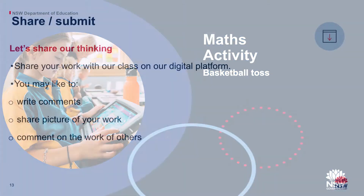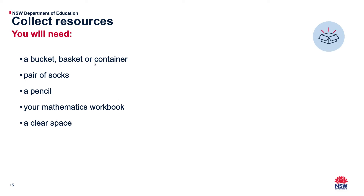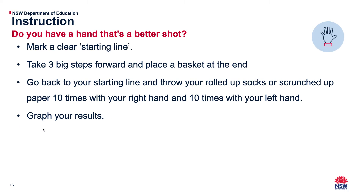Then you've got the maths activity, which is Basketball Toss - I find this one really fun. If you click on this link, it'll take you to a website with a video that shows you how to set it up. You need a bucket, basket or container, a pair of socks, a pencil, a workbook, and a clear space. You're going to make a starting line, take three big steps forward and put a basket at the end. Then go back to your starting line and play basketball with your socks - try to throw your socks into the basketball hoop. You're going to do that ten times with your right hand, ten times with your left hand. Then we want you to graph your results using tally marks.